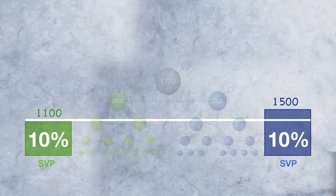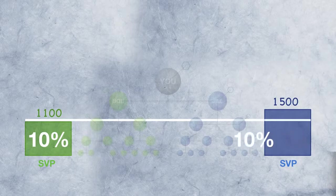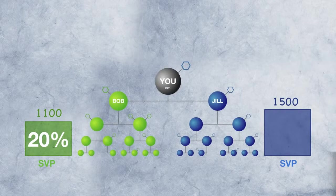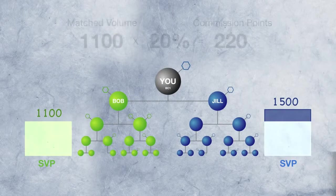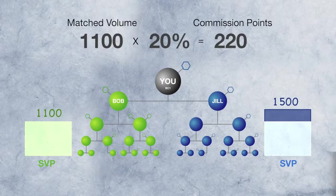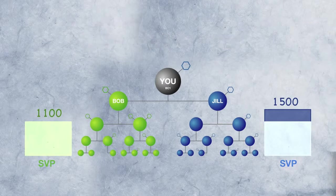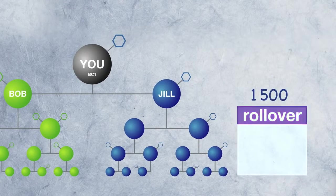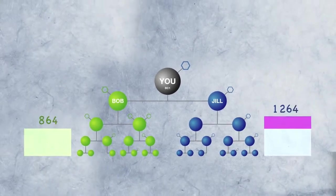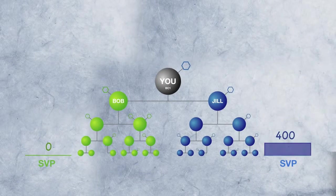Here's an easy way to look at it: your weekly commission is 20% of the small side. It's that simple. So in this case, you'd earn 20% of 1,100, or 220 commission points. And don't worry, you don't lose the extra points on the other side. They are automatically rolled over to the following week, up to 5,000 points, to contribute to your next paycheck.